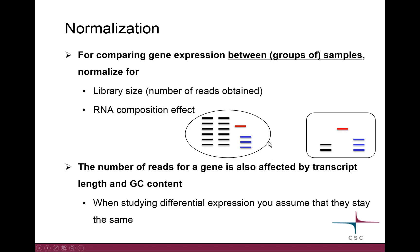We need to correct for both library size and composition effect when comparing groups of samples. If you just wanted to compare one gene to another within a single sample, you would be correcting for different things, such as transcript length and GC content.